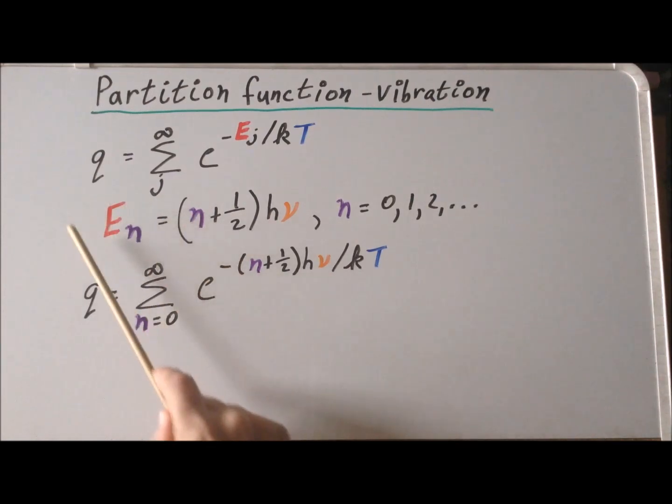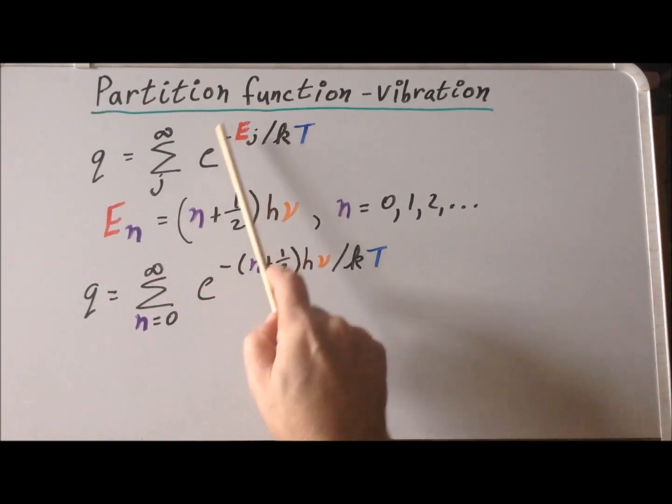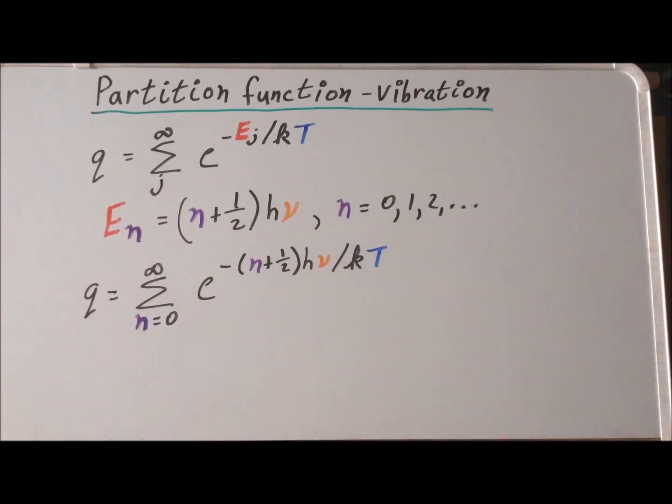If we substitute this expression for the energy into the formula for the canonical ensemble partition function, what we get is this somewhat complicated looking expression where we've changed the index from j to n for convenience, and we know that we start at the n equals zero case and we go up through all possible values of n. So here is the index n and we have the Planck's constant h, the vibrational frequency nu, k is Boltzmann's constant, and T is the temperature of the oscillator.